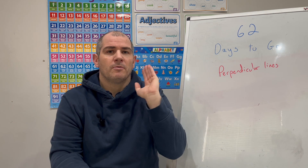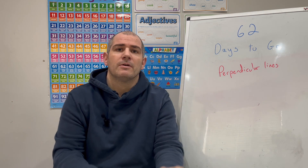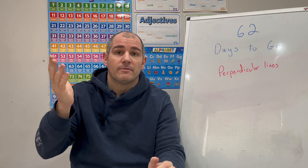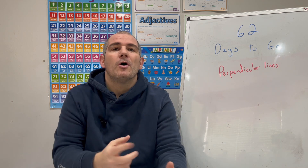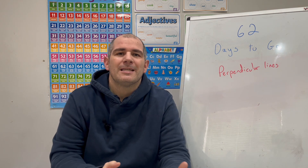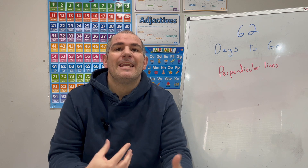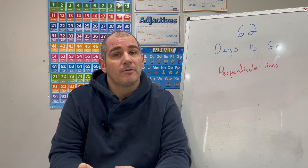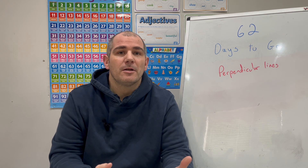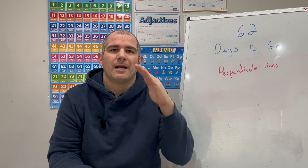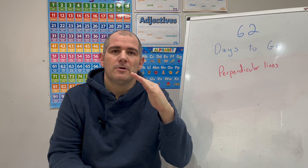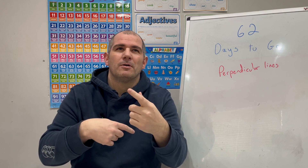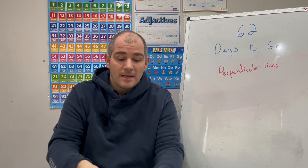So for instance, if the gradient of one line is 5, the gradient of the other will be negative one fifth, because 5 times negative one fifth equals negative 1. Another way to do it is: if you know the gradient of one line, you find the negative reciprocal of that, and that will tell you the gradient of the other one. So for instance, if the gradient of one line is 2 thirds, then the gradient of the other line would be the negative reciprocal of 2 thirds, which would be negative 3 halves.